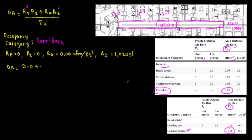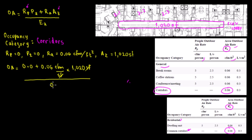Outside air equals zero times zero plus RA (0.06 CFM/sqft) times AZ (1020 sqft), all divided by EZ (0.8). The square foot units cancel, and we get approximately 77 CFM.